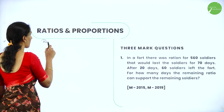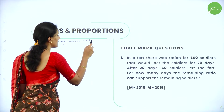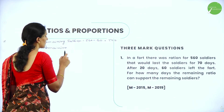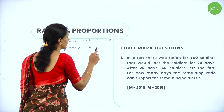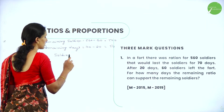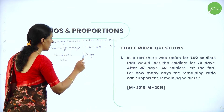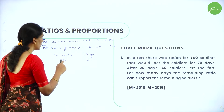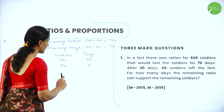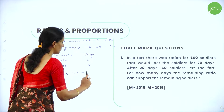Let's calculate for the remaining soldiers. Remaining soldiers: out of 560, 60 left, so only 500 remain. Remaining days: 70 minus 20 equals 50. So we have soldiers and days. For 560 soldiers the remaining days was 50. Now since only 500 soldiers remain, we need to find how many days the food will last. So I need to find the value of x.